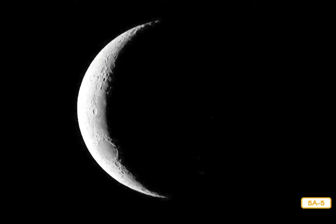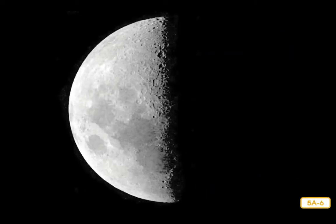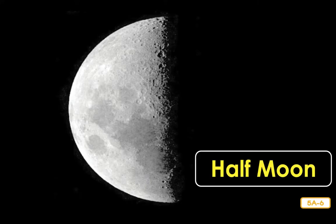The moon never looks exactly the same from one night to the next, but the moon does not change its shape — it is always a big, round rock. It only appears to change shape depending on how sunlight hits the moon during its orbit. On certain nights you can only see a sliver or small piece of the moon, called a crescent moon. The crescent shape is curved like a banana and comes to a point at the end. On other nights it looks like someone sliced the moon in half — this is called a half moon.